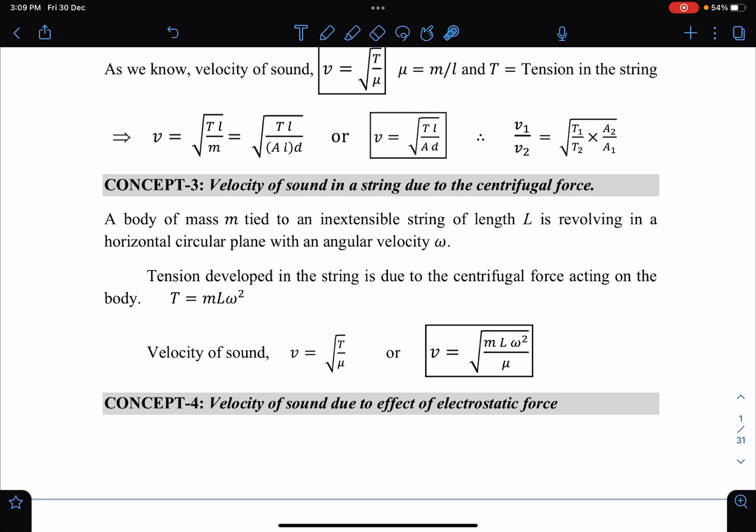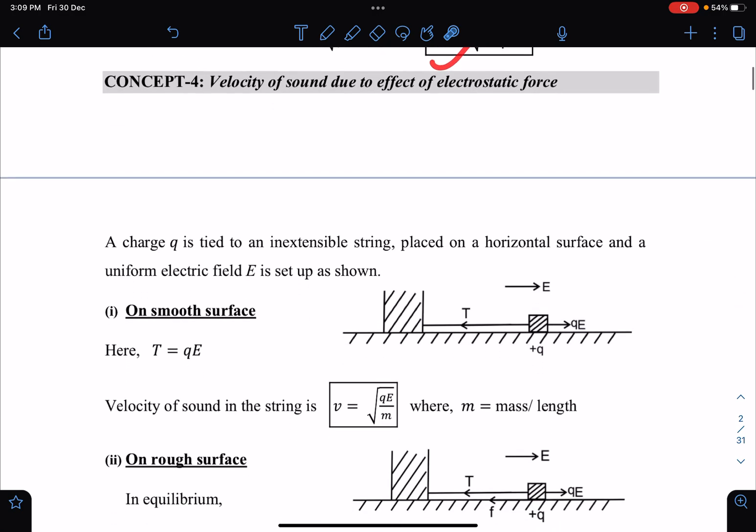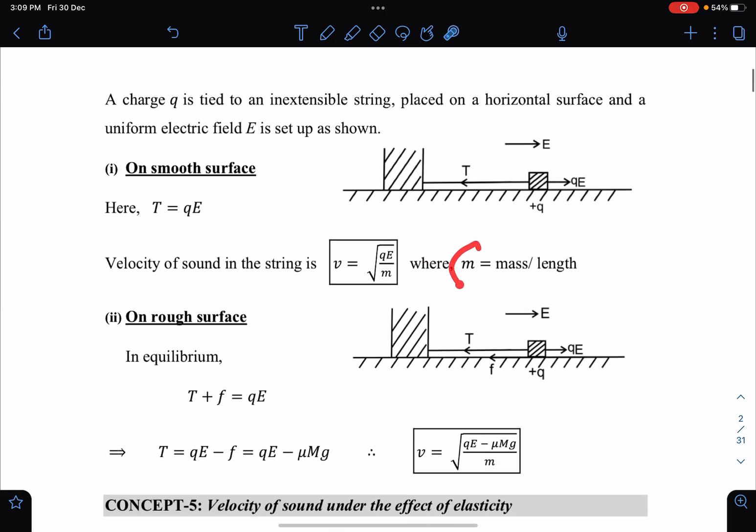Velocity of sound in a string due to centrifugal force. Similarly, instead of external force mg they can use electrostatic force. V is under root of T by mu. From there you can calculate - by the way, here M is mass per unit length, so this is mu. On a rough surface we can write friction will be acting and based on that we can calculate new tension and new velocity.